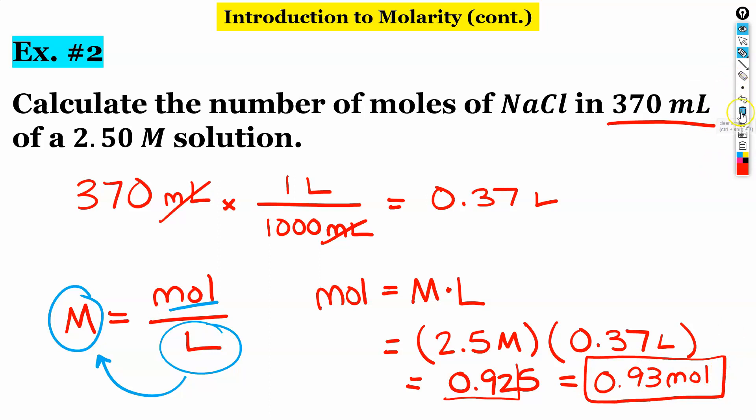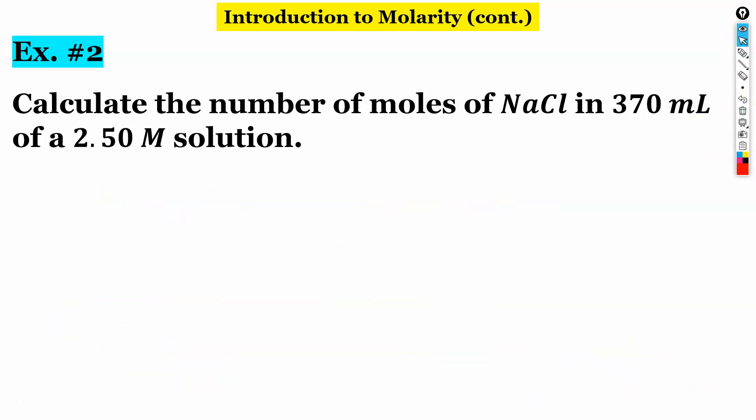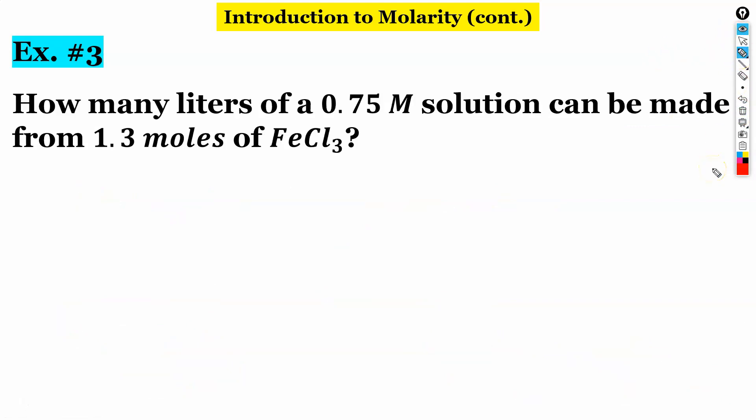All right, let's take a look at one more. So in this last example, it says, how many liters of a 0.75 molar solution can be made from 1.3 moles of FeCl3? Well, we're given no volume here. So we're going to need to do a little bit of rearranging. So our molarity equation, capital M equals moles over liters. We're solving for our liters.